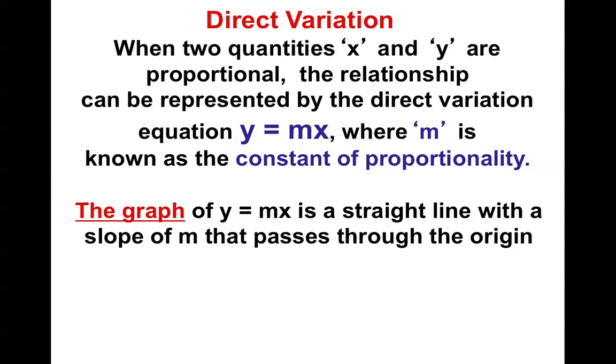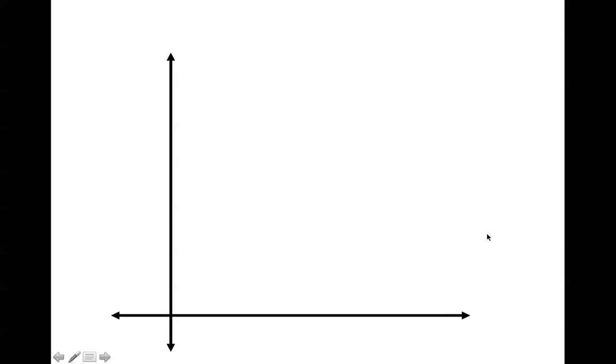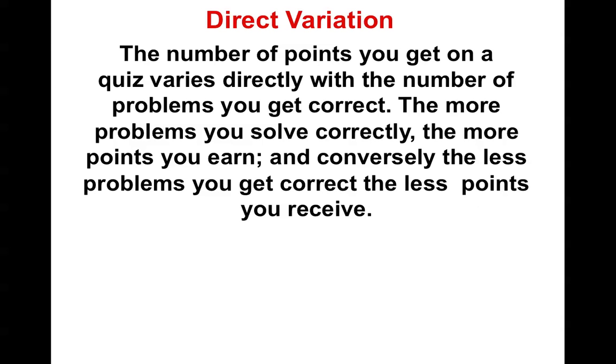The graph of y equals mx will be a straight line with the slope of m, and it will pass right through the origin. So here's some examples. Notice, here is the origin. This would be a direct variation equation because it's a straight line that goes right through the origin. This would be another one, straight line right through the origin. Here's another one, straight line right through the origin.